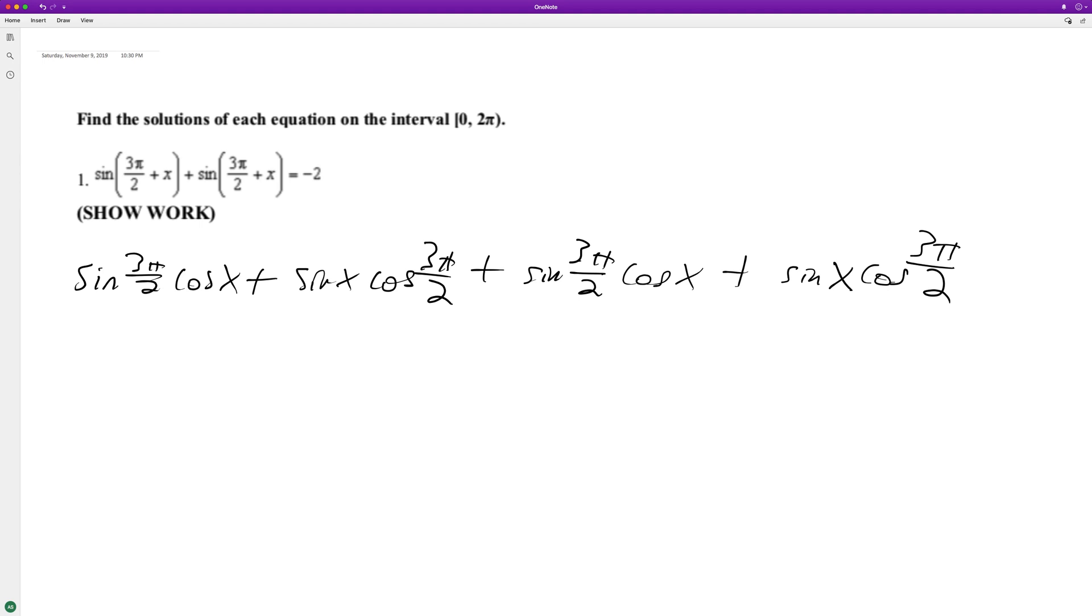So sine of 3π/2 is equal to negative 1, cosine of x is just that, plus sine of x cosine of 3π/2 is equal to 0.